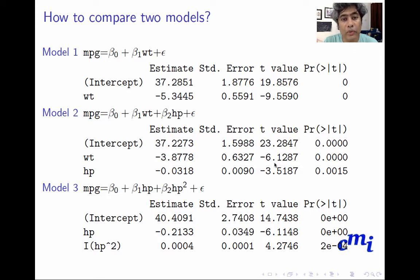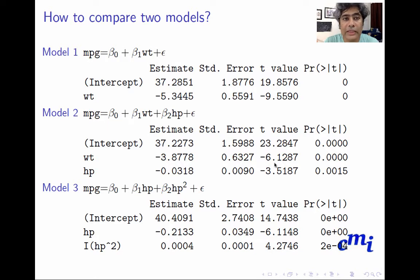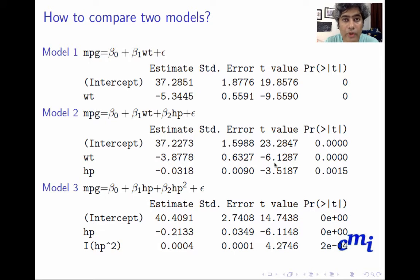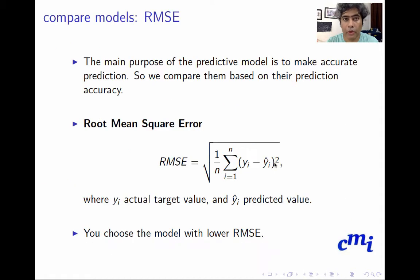Statistical inference tells me whether a particular predictor has a significant effect within a given model, but if I have many models, I need to choose among them first. Once I choose the best model, then I can do statistical inference. So we are going to talk about how to choose a model from a set of many models.